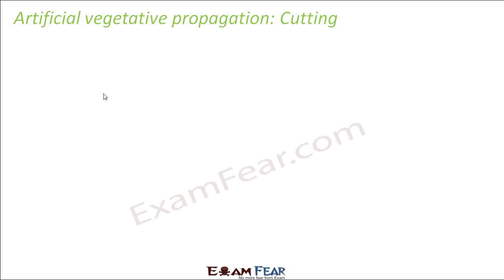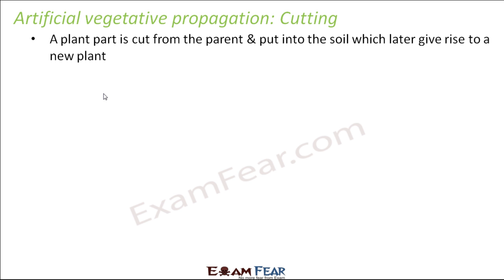Let us look at the first artificial vegetative propagation process, that is cutting. Here, a plant part is cut from the parent and put into the soil, which later gives rise to a new plant. Have you ever seen that if you have a small garden in your house, and you like a plant in your neighbor's house — what do you do? Sometimes you just take a stem of that plant and then put it into the soil. Over a period of time it gives rise to a new plant. So you just took one part of that plant and you got a new plant — that is called cutting.